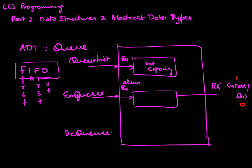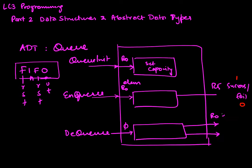The DQ operation takes no inputs but returns two outputs: it returns in R0 the element dequeued, and in R5 the success or failure. Again, success is 1 and failure is 0.